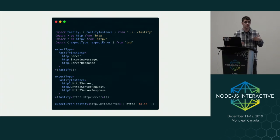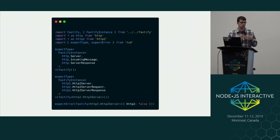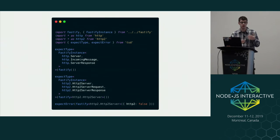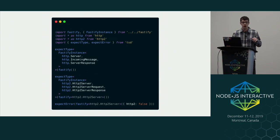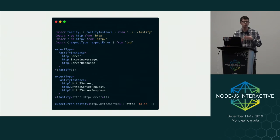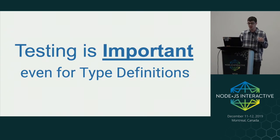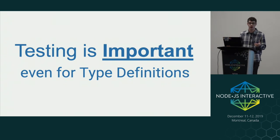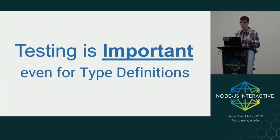Going back to the HTTP server example: by calling the default Fastify, we expect an instance with those types. Similarly, if we pass in the HTTP2 server type, we expect it to be an HTTP2 server. At the bottom, you can see the expectError line — if you set that Boolean property to false, it will error out and we can test our type definition logic. I think that's incredible because testing is very important, even for type definitions, and not a lot of repositories are doing it. Now you can assert that your types are even stronger than before.